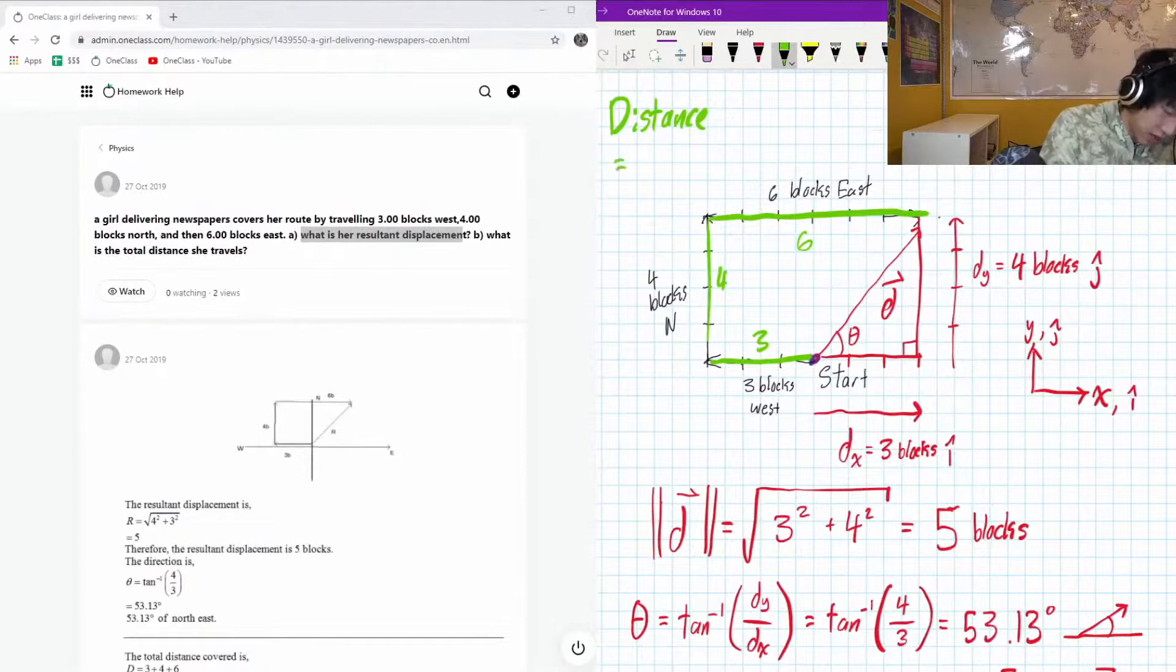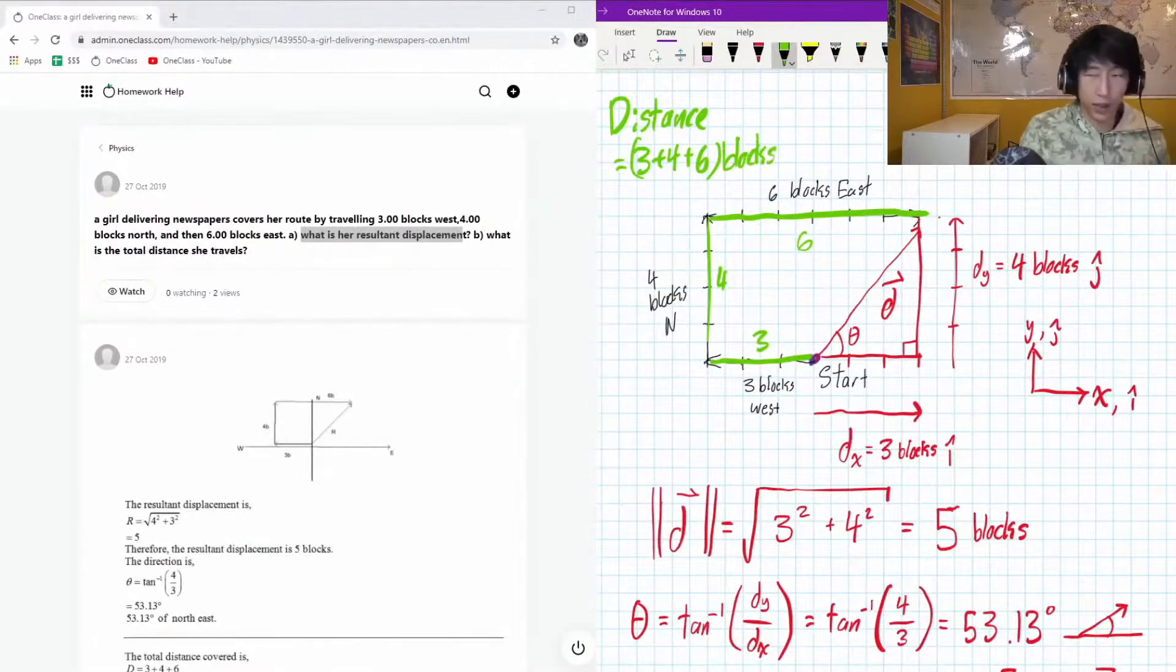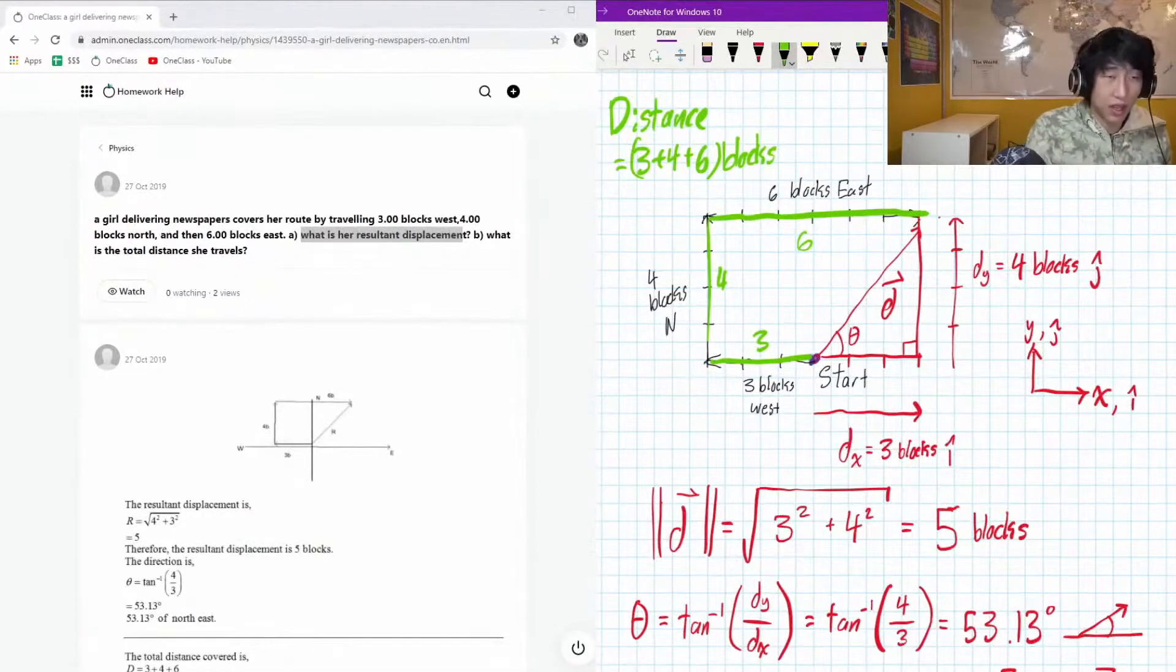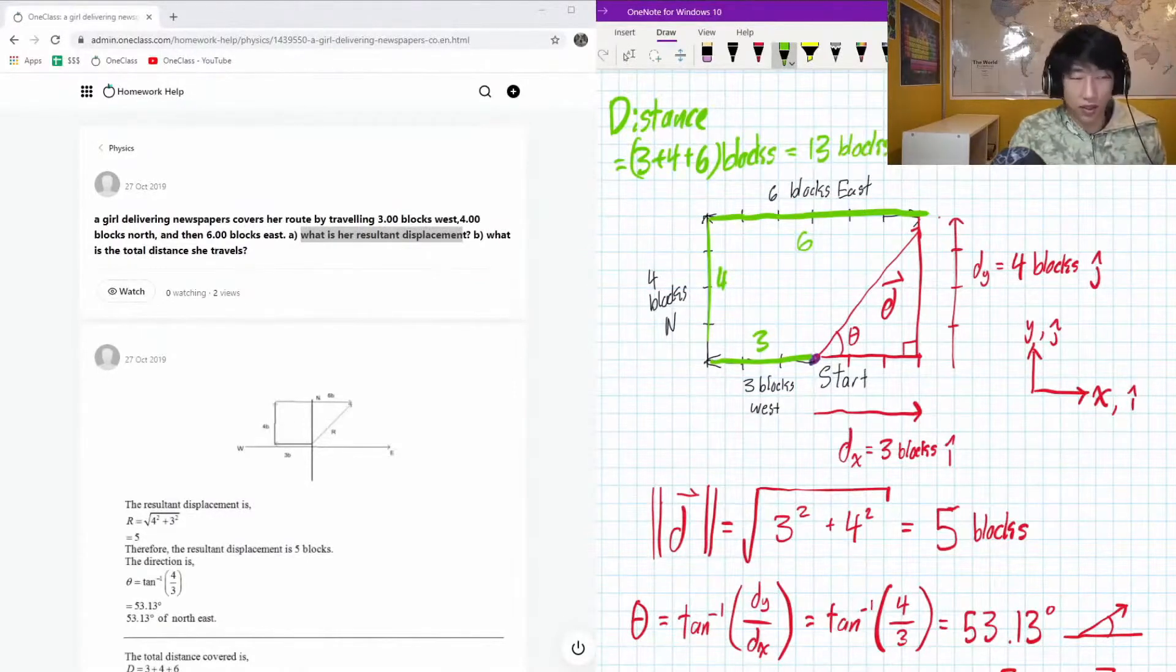So our distance traveled, this is just going to be 3 plus 4 plus 6 blocks, because that's the unit for distance that we're using. Sometimes we use meters. I guess here we're going to be using blocks. And quick math, 13, lucky number. 13 blocks, that is how much our newspaper deliverer traveled. And that's the calculation here, that's awesome.